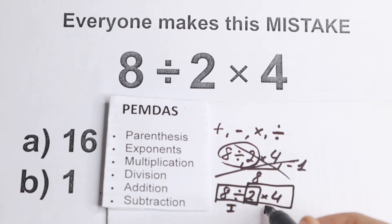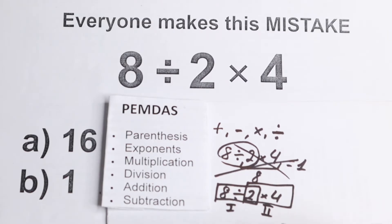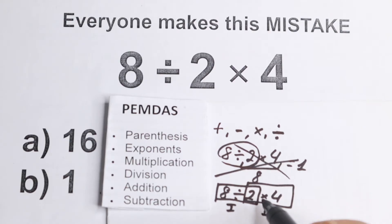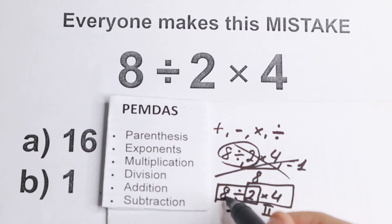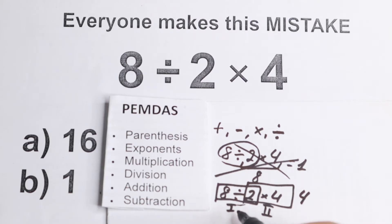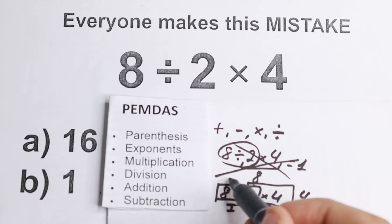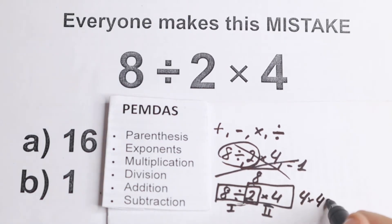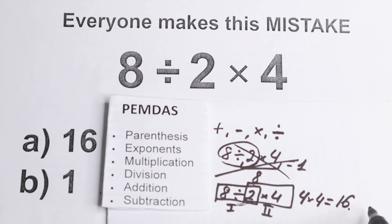From left to right, the first group is 8 divided by 2, and the second group involves times 4. Division comes before multiplication reading left to right, so we do 8 divided by 2 equals 4, then 4 times 4 equals 16. That's the only thing left to do, and the correct answer is 16.